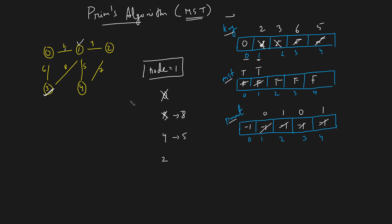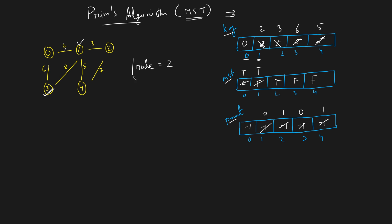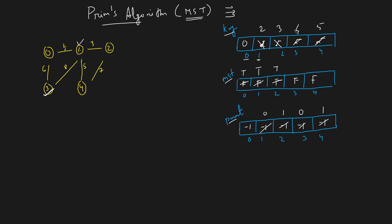Now we iterate the key array again for the next minimal not in MST. Nodes 0 and 1 are already in MST. The next minimal is node 2 with value 3, so we take it and mark it as true. Adjacent nodes of 2 are 1 and 4. Node 1 is already in MST so skip it. Connecting to node 4 requires weight 7, but we already have 5 for node 4, so we don't update it.